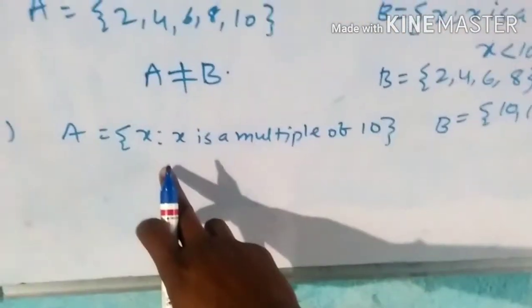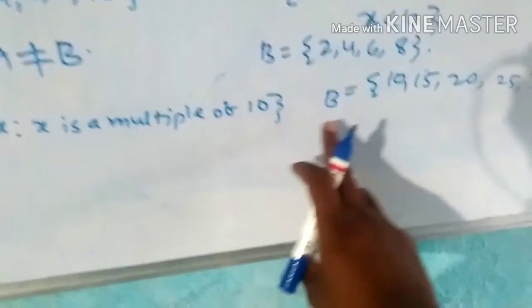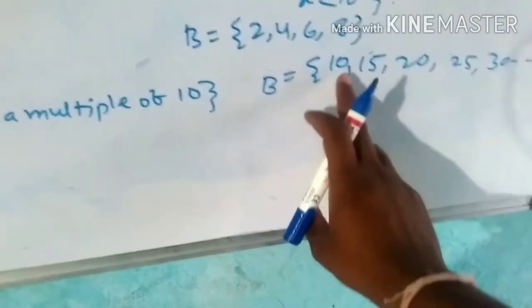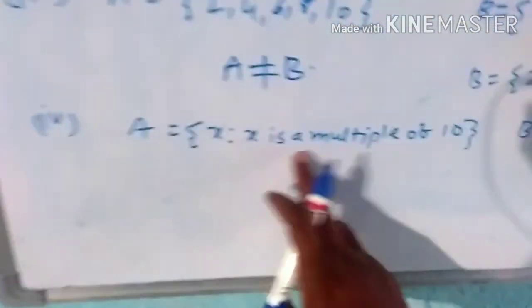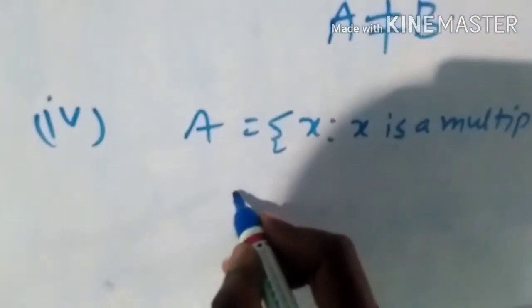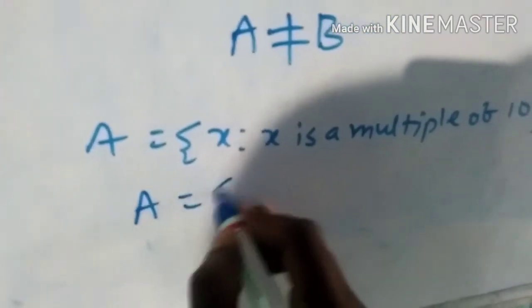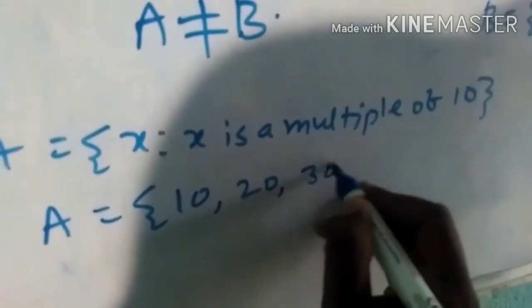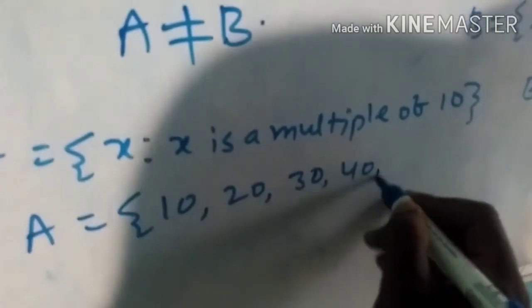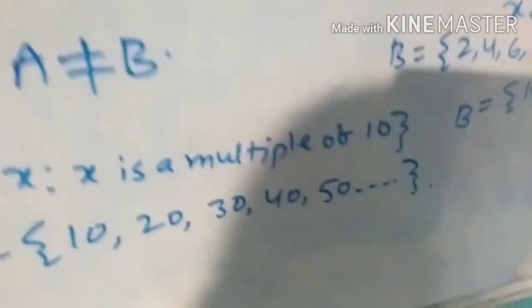Next, A is equal to {x such that x is a multiple of 10} and B is equal to {10, 15, 20, 25, 30, ...}. So A is equal to {10, 20, 30, 40, 50, ...} and so on.